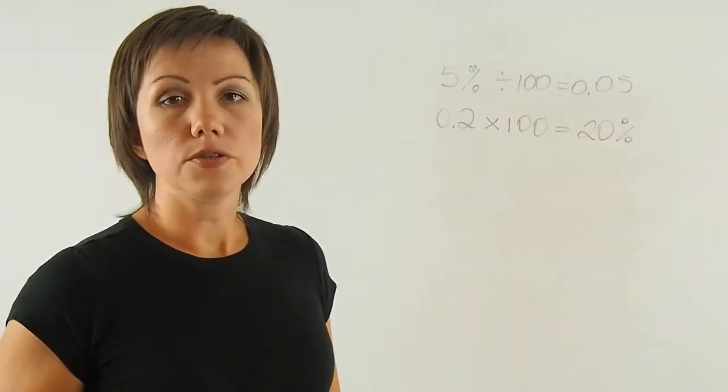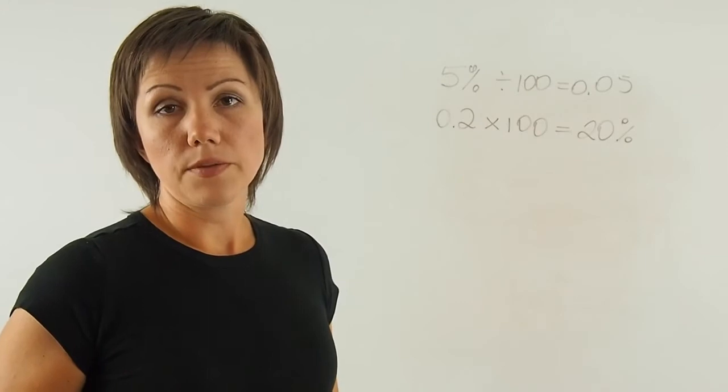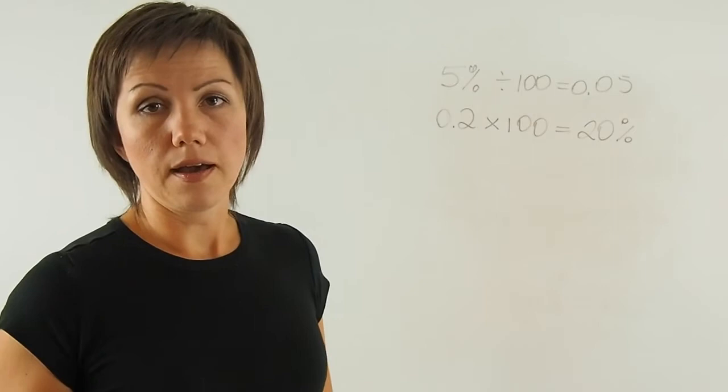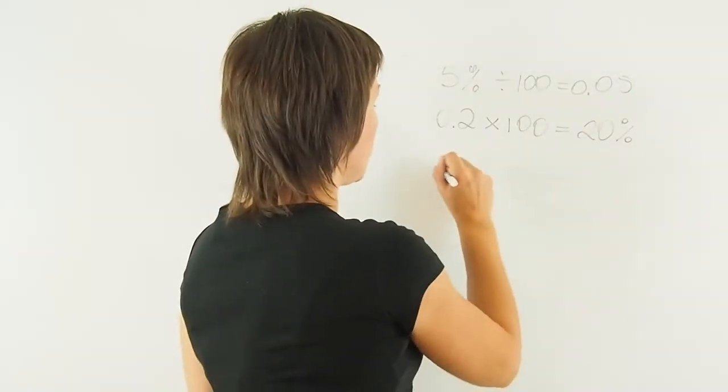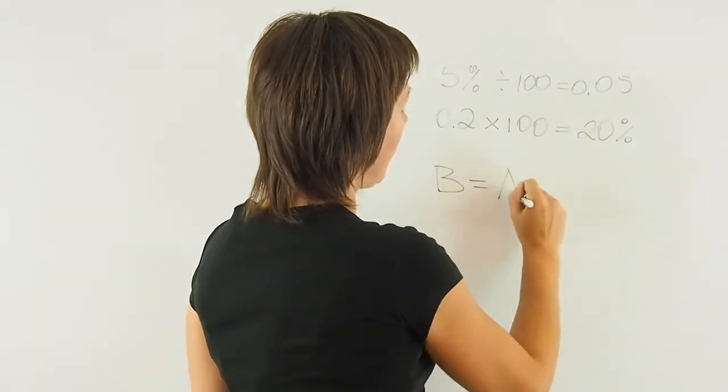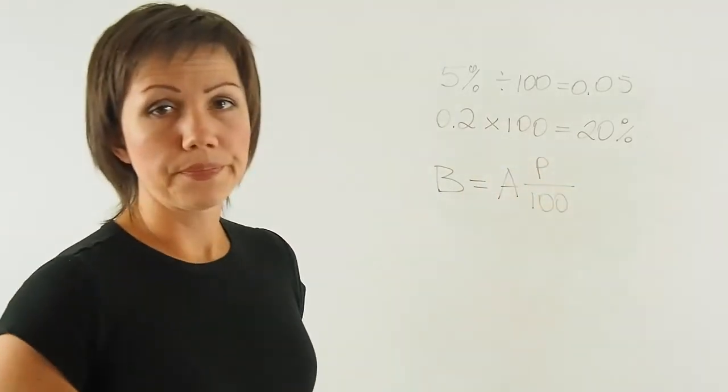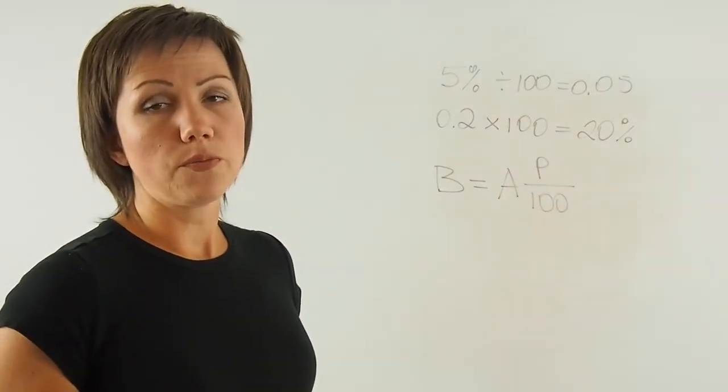If I want to find how many percent p of a I have, then I'll use the formula b equals a times p over 100.